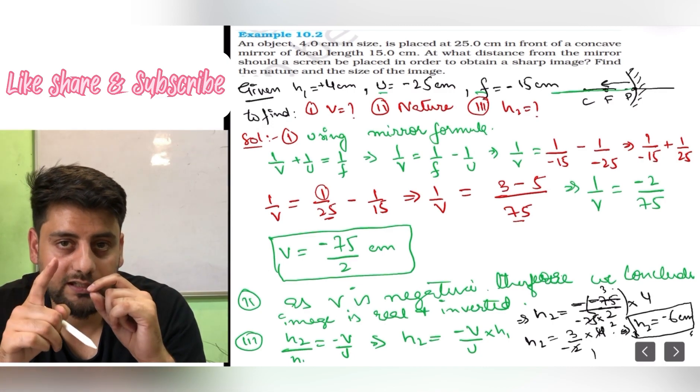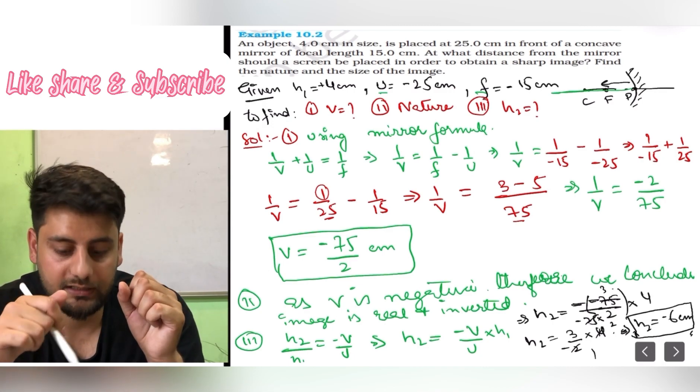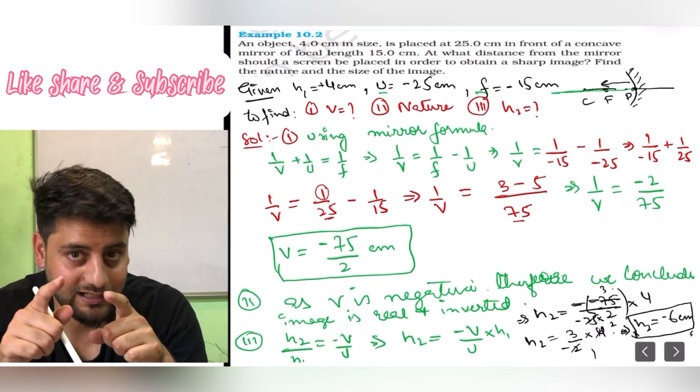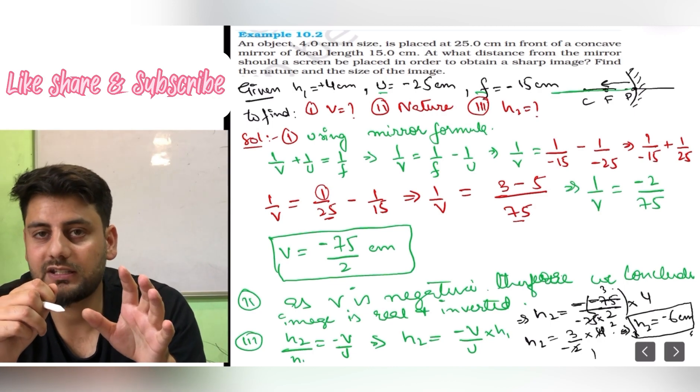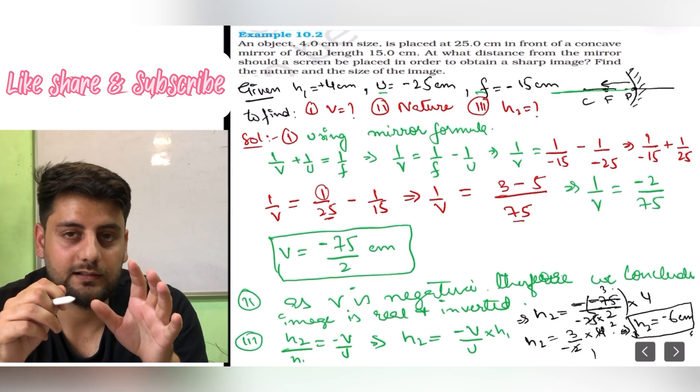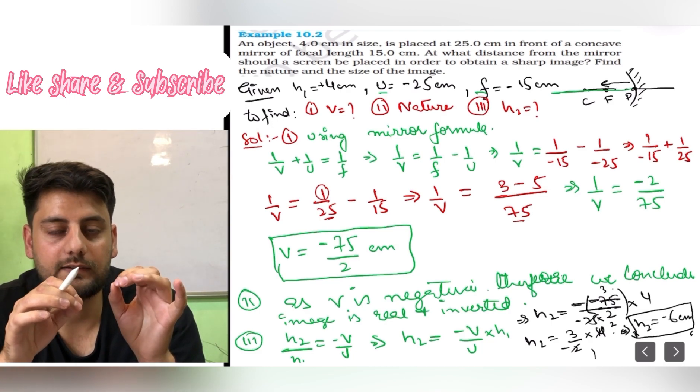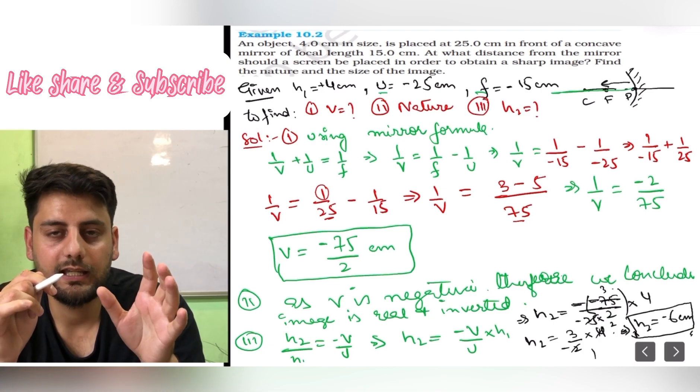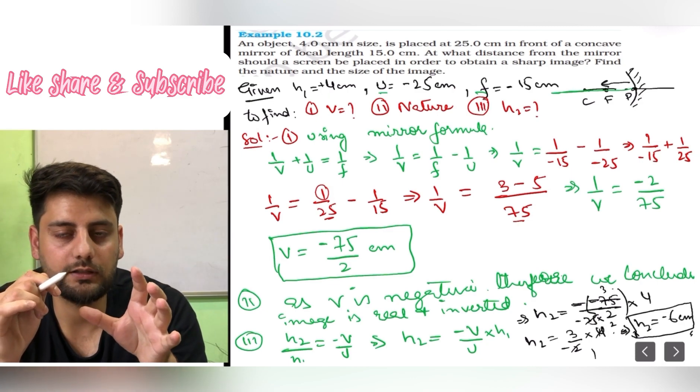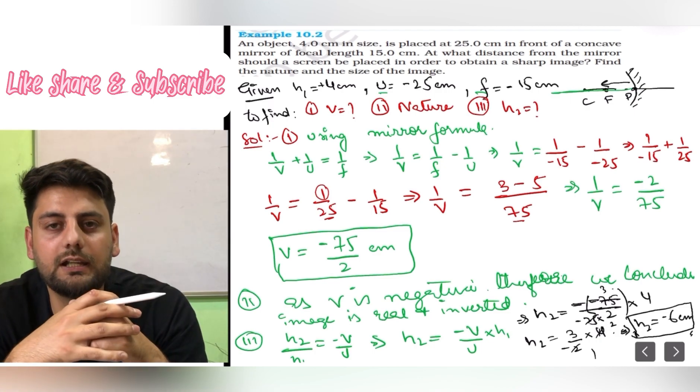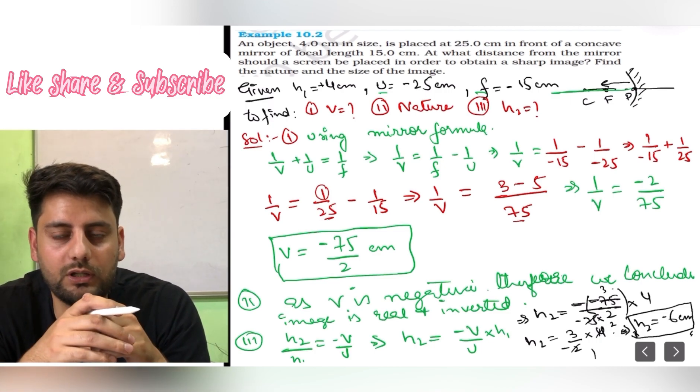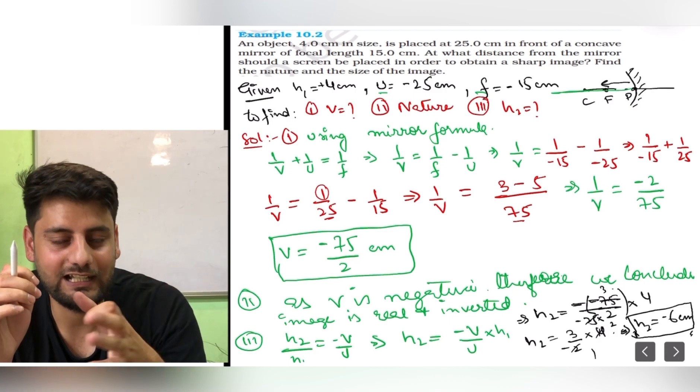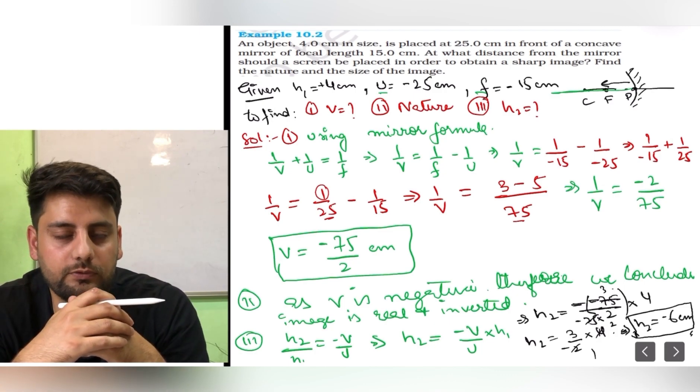And also the image is real and inverted, so we are getting negative sign. That means we could have predicted it. And the third thing is image is a bit bigger than the object. Image is 6 centimeter, object is 4 centimeter. Image is bigger than the object. And it was real and inverted. That's why h2 is negative. So if you remember the cases properly, you can predict the result. At least you don't have to revise or recheck your result because you can confirm it from the cases. It will only take few seconds after calculation to check whether it falls in some kind of case. Almost all results will fall in the category of cases. So you can easily check whether the answer is right or wrong without recalculating everything. Let's do few more questions in the next video. Thank you.